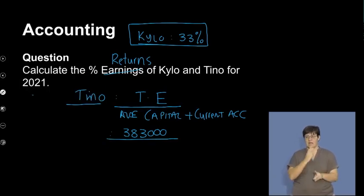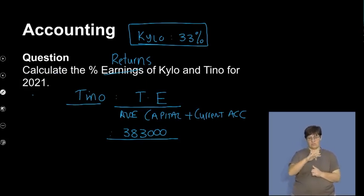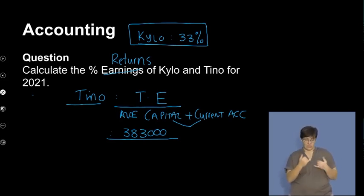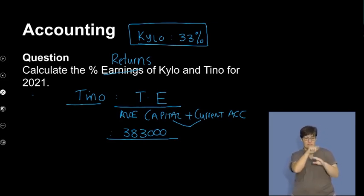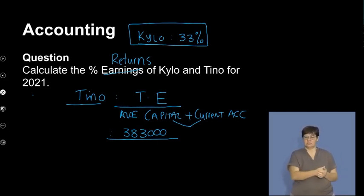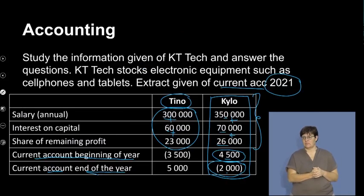Once again, we're going to calculate Tino's average equity. Remember, we're taking capital plus current account for the current year and the previous year, and we're going to divide by two. Now, because I did that calculation in detail on the previous slide, I just want to go to the table, because I just need a bit of space.